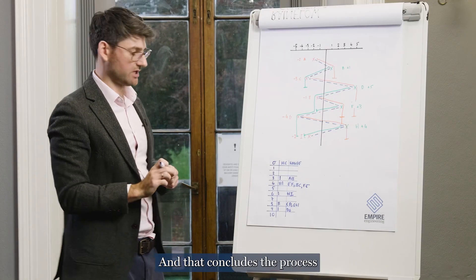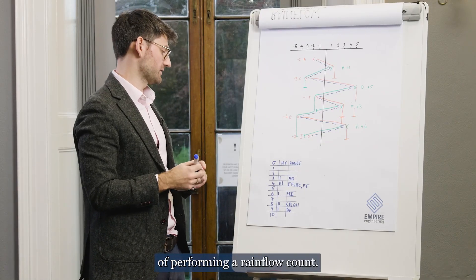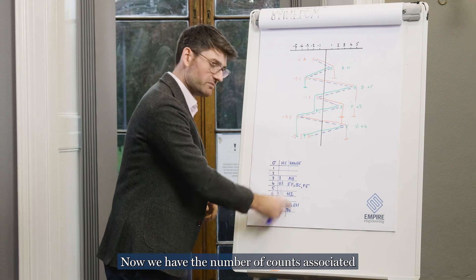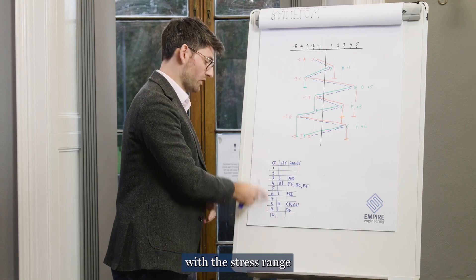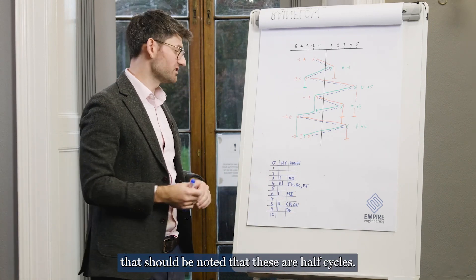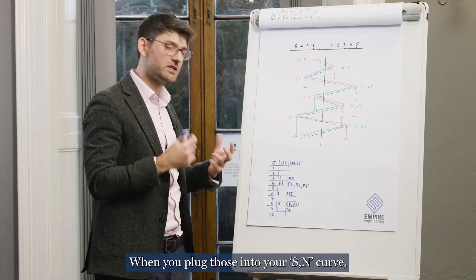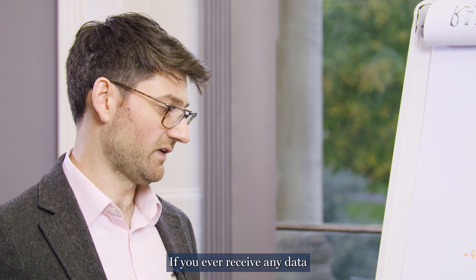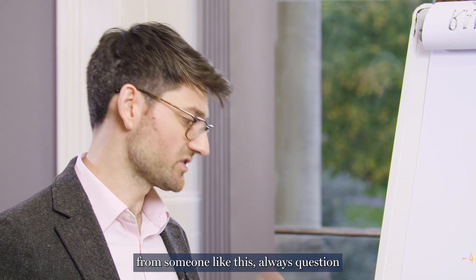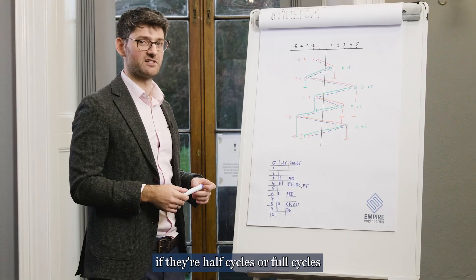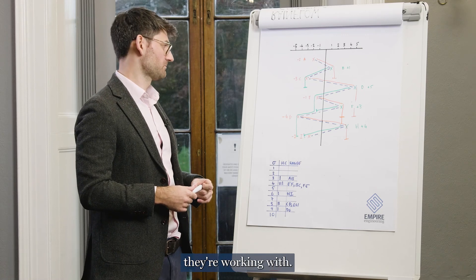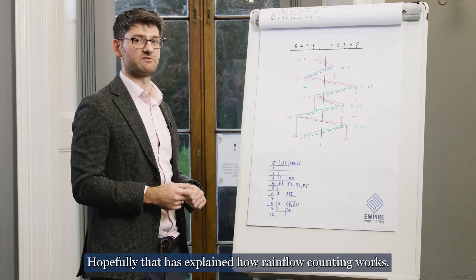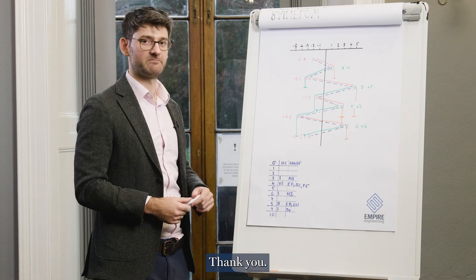And that concludes the process of performing a rainflow count. Now we have the number of counts associated with the stress range. That should be noted that these are half cycles. When you plug those into your S-N curve, you need to double them such that we get full cycles. If you ever receive any data from someone like this, always question if they're half cycles or full cycles they're working with. Hopefully that's explained how rainflow counting works. Until next time, thank you.